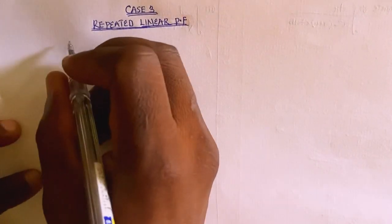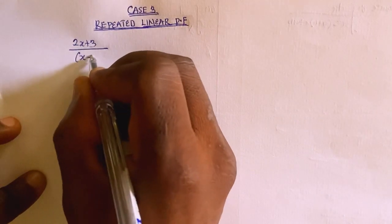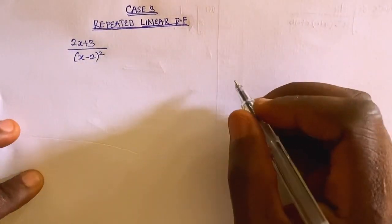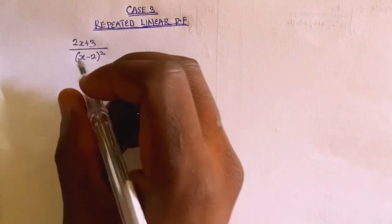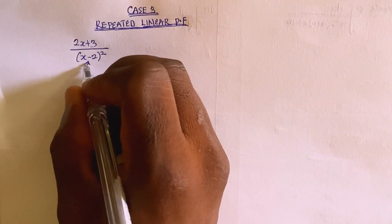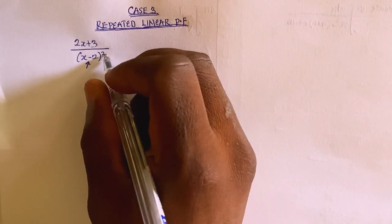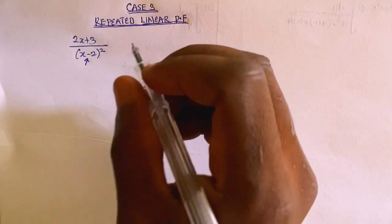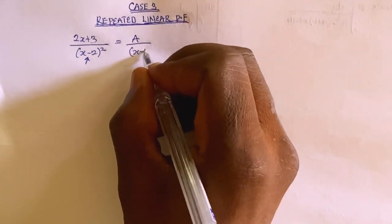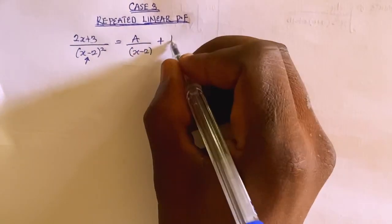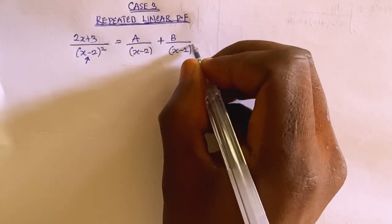Suppose you are asked to resolve (2x + 3) divided by (x minus 2) all squared into partial fractions. If you look at this question, you can see that the denominator has (x minus 2) which is linear and squared, meaning it is repeated. So in this case you are going to have it equal A divided by (x minus 2), plus B divided by (x minus 2) squared.